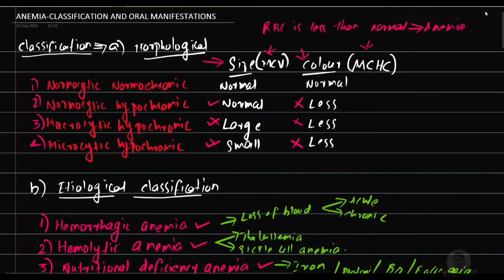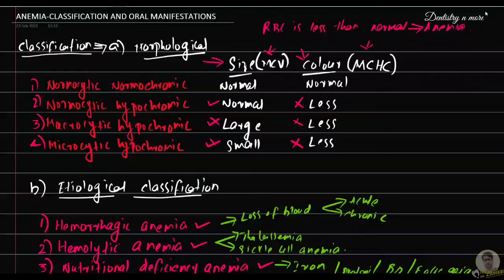Hello everyone, welcome back to another session on dentistry and more. Today we have anemia, focusing on classification and oral manifestations. We are not touching the treatment parts or general symptoms, but mainly focusing on the clinical variants of anemia and its oral manifestations. Anemia is a condition where the number of RBCs is less than normal.